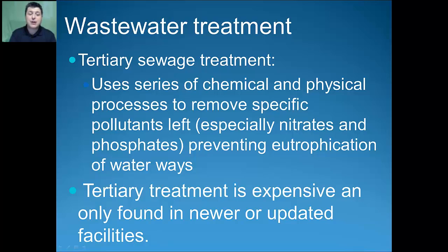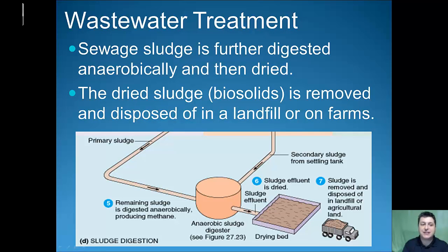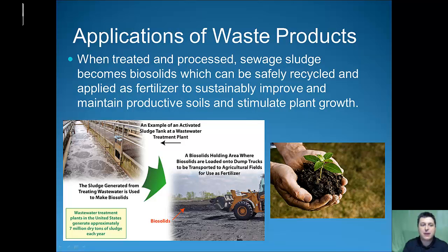Tertiary treatment is expensive and is usually only found in newer or updated facilities. The solid sewage sludge is further digested anaerobically and then dried. This dried sludge, often referred to as a biosolid, can be disposed of in a landfill or applied on a farm. When treated and processed, sewage sludge becomes a biosolid that can be safely recycled and applied as a fertilizer to sustainably improve productive soils and stimulate plant growth. Only biosolids meeting the most stringent federal and state standards can be approved for use as fertilizer. Wastewater treatment facilities in the United States generate over 7 million dry tons of sludge every year.